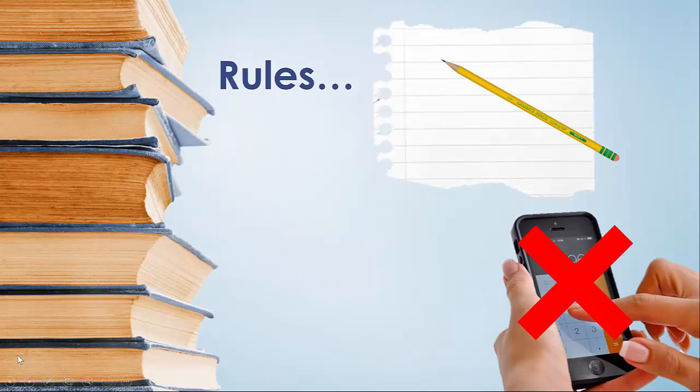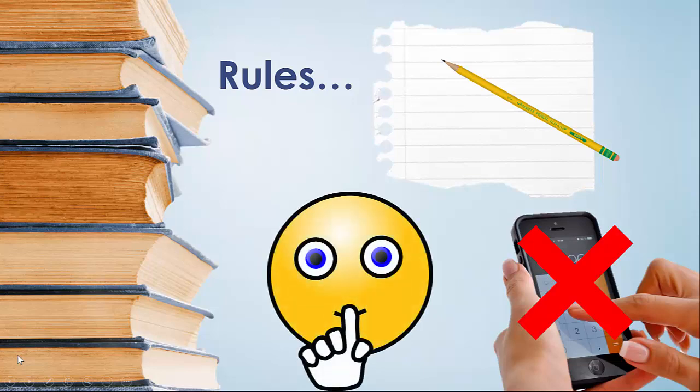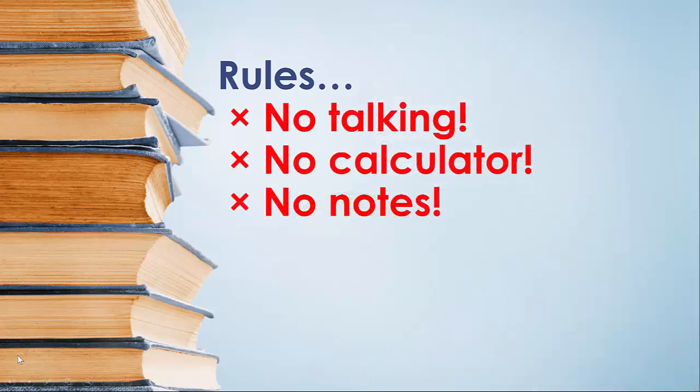I'm going to ask you to add up some numbers, but I want you to do it in your head. So put away your calculator. And I want you to do this on your own, so don't talk to anybody. So here's a summary of those rules: no talking, no calculator, and don't take any notes. Don't write down anything until I ask you to at the very end.